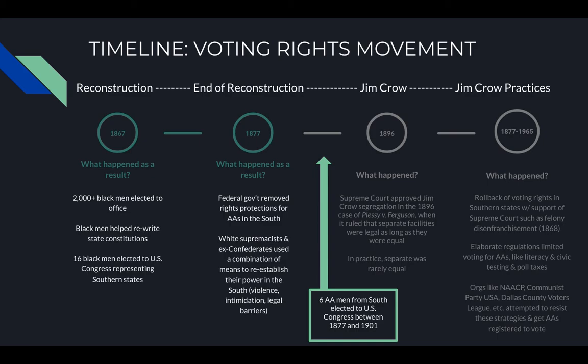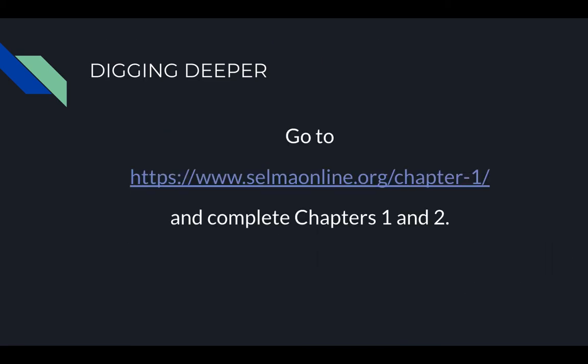During the Jim Crow era, organizations like the NAACP, the Communist Party USA, the Dallas County Voters League, and many others were attempting to resist these strategies and get African Americans registered to vote. We've just scratched the surface of this voting rights movement over the last several hundred years. Now I want you to go to https://www.selmaonline.org/chapter-one/ and complete chapters one and two to take a closer look. We just reviewed the thousand-foot view — now go deeper and then come back.